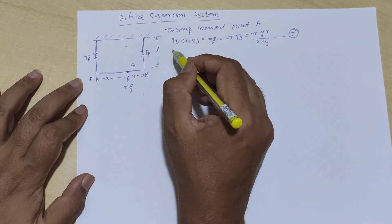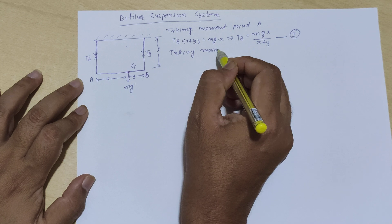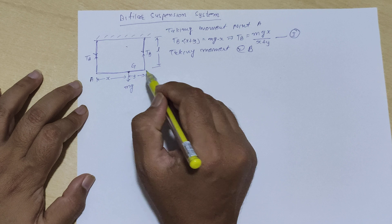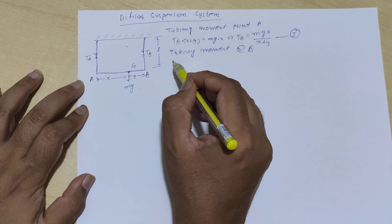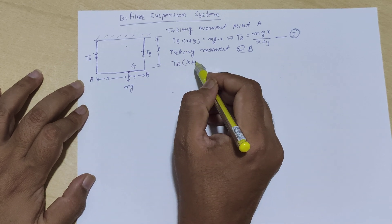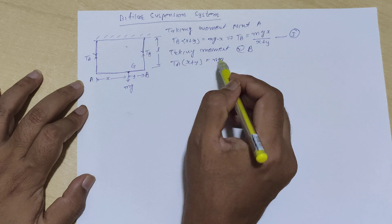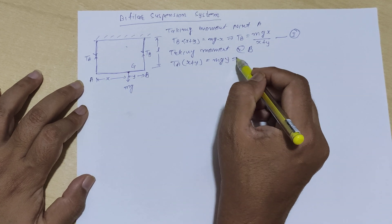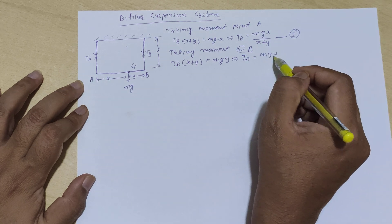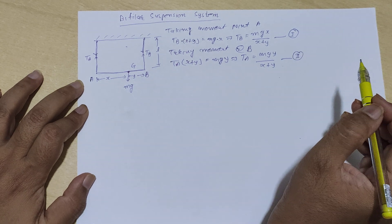Similarly, let us take the moment about point B. About point B, TA is the upward force, so TA into (x plus y) equals mg into y. We are interested in TA, which is equal to mg·y divided by (x plus y). Let us say this is equation number 2.